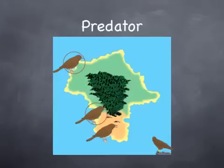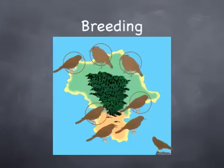Your predator comes along and wipes out some of your birds. You have one thin bird that is not carrying the trait to be pudgy, and then you've got the two other ones that are.